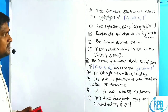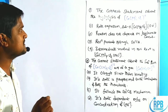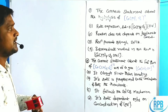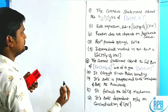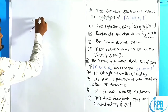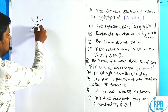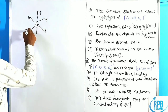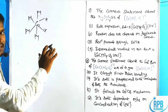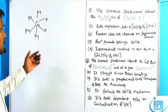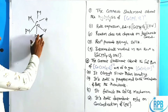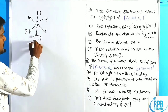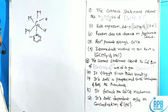Now let us look at problem number one: the correct statement about the hydrolysis of [Co(py)4Cl2]+. The given complex is cobalt with four pyridine ligands and two chloride ligands — it may be either the cis or trans complex. Here, py indicates pyridine, with nitrogen as the donor atom.